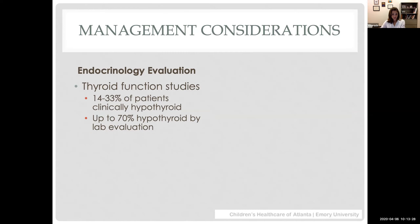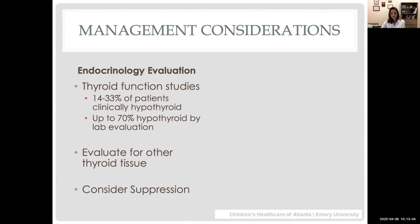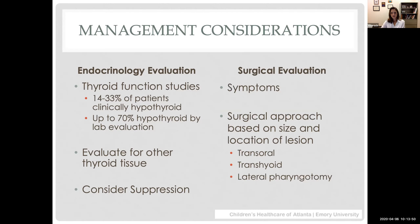These patients all need a TSH. Though not a minority, the majority will be hypothyroid based on lab evaluation. We also need evaluation for other thyroid tissue. The primary driver for intervention is symptoms. In kids this picture can be muddied by normal age-appropriate symptoms related to adenotonsillar hypertrophy — this patient had relatively large tonsils, raising the question of whether her snoring came from adenotonsillar enlargement versus actual enlargement of the lingual thyroid tissue.